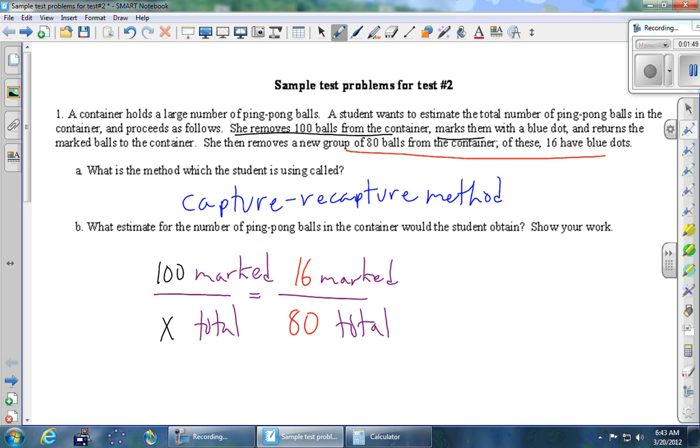And we'll solve by cross-multiplying. So cross-multiplying means multiply the two numbers on this diagonal, multiply the numbers on that diagonal, and make them equal to each other. So we get 100 times 80 equals 16 times x.